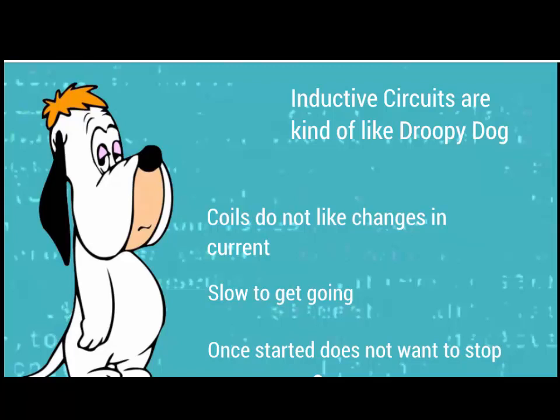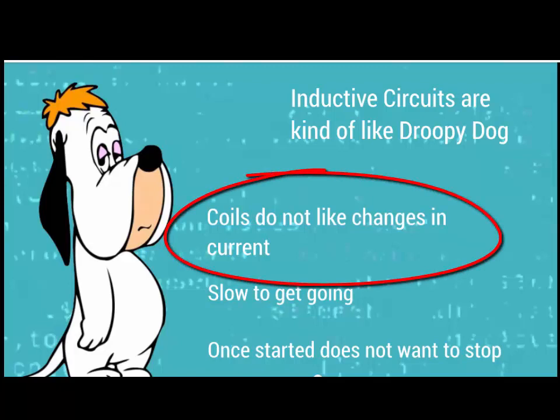Droopy Dog was like a college roommate that I had. That guy did not want to get up in the morning — he would get up about one or two o'clock in the afternoon. He was really slow to get going. And inductive circuits don't like to stop once they get going; they try to keep current flowing. This roommate was slow to get up in the morning and would want to stay up all night, going to bed about 5 a.m. when the rest of us had already been sleeping.